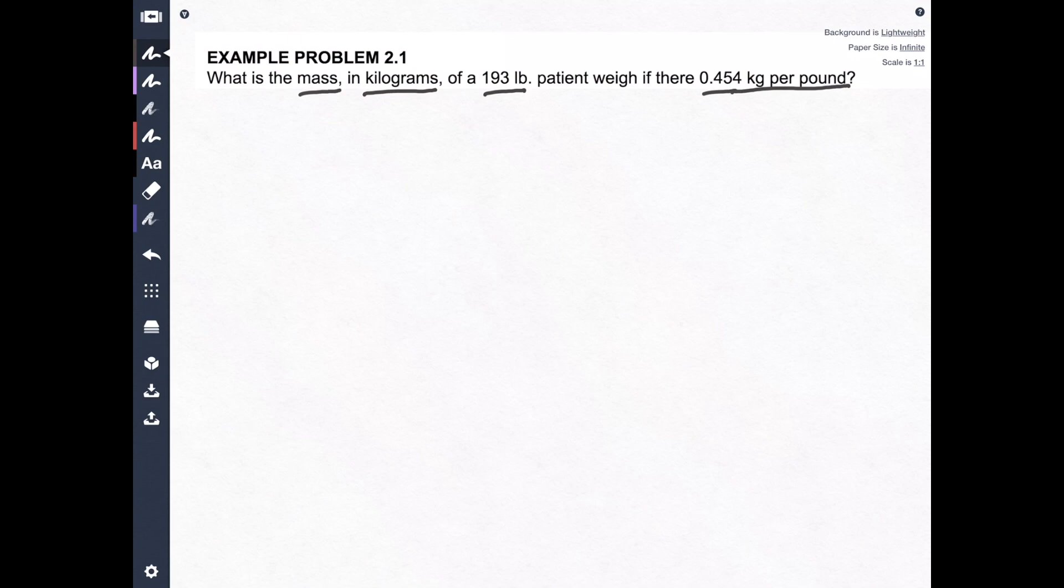Well, we know, what do we know? We know that we have 193 pounds. We know that, 193 pounds. Let's make this marker a little bit smaller. There we go. 193 pounds. And we also know that there are 0.454 kilograms per pound.